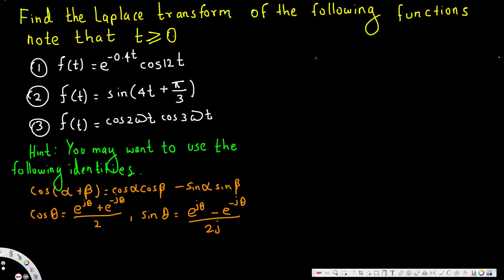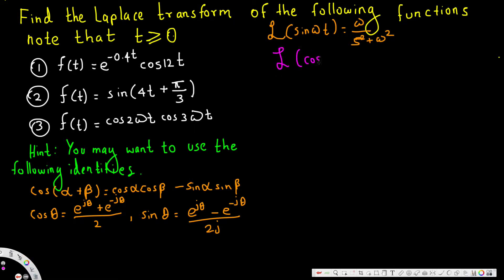Before we do the first one, we have to know some basic things. The Laplace transform of sin(ωt) is ω divided by s² + ω². The Laplace transform of cos(ωt) is s over s² + ω². And the Laplace transform of e^(−at) f(t) equals F(s + a).